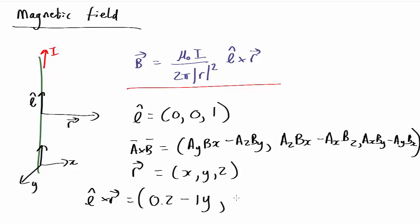And similarly you get x minus 0 times z, and 0 times y minus 0 times x.